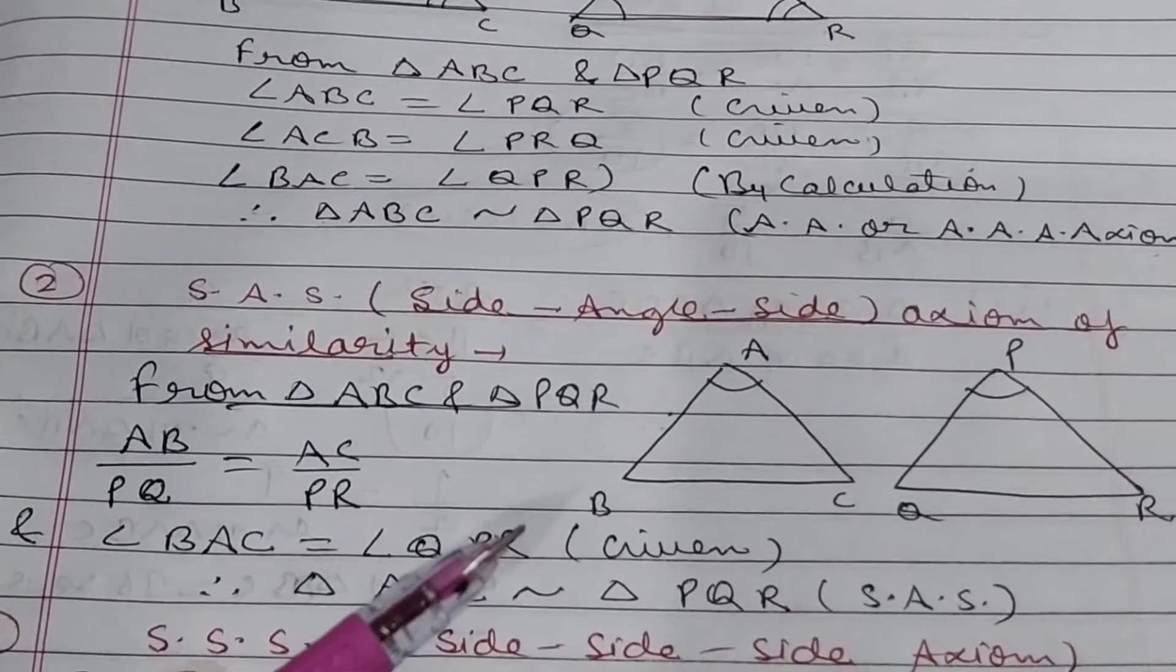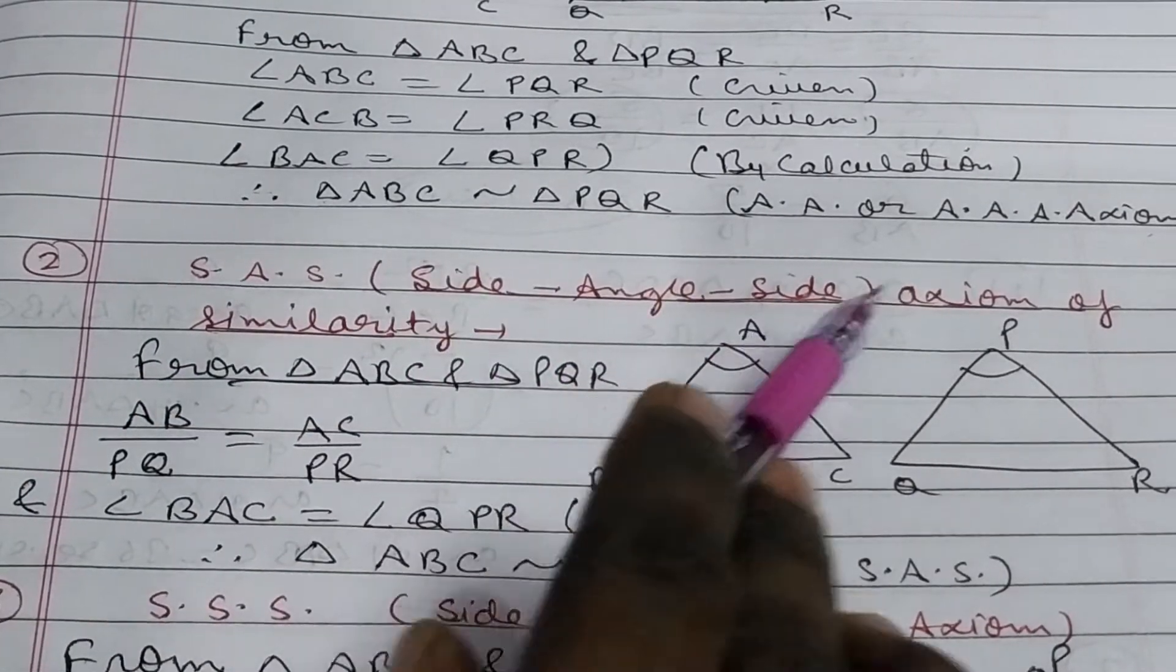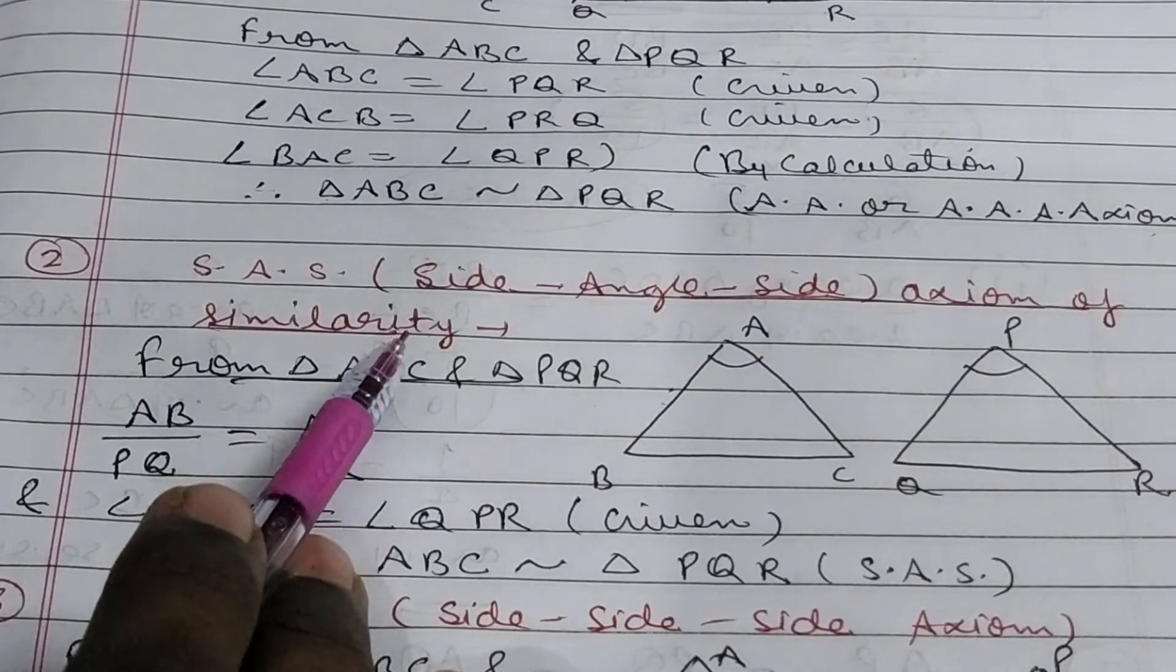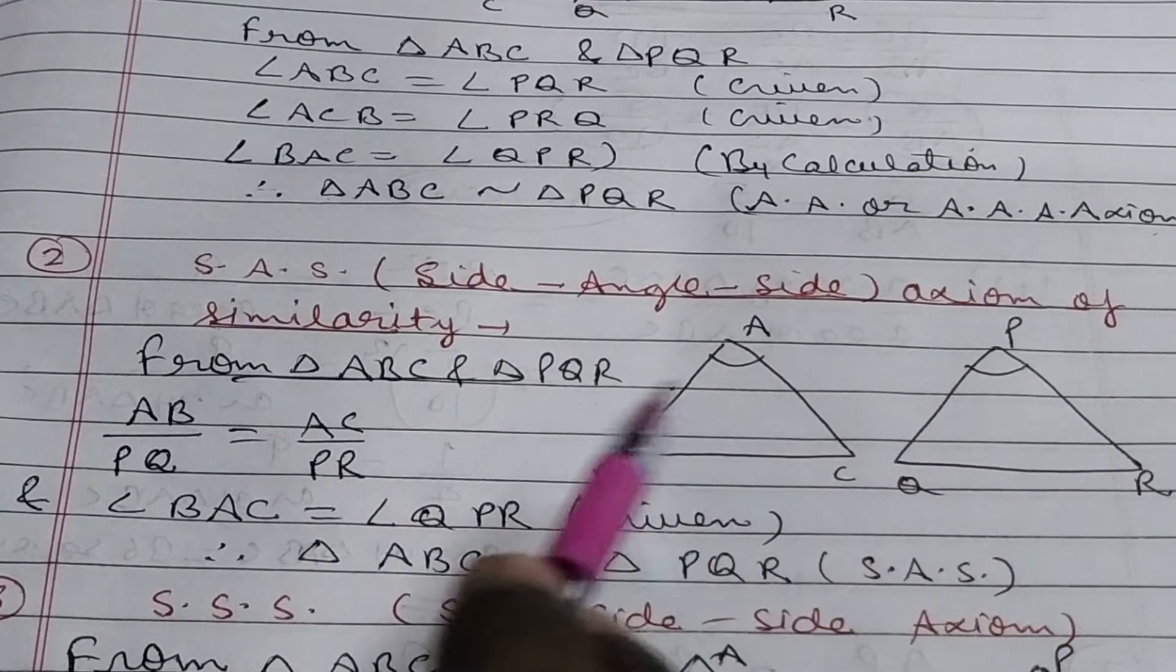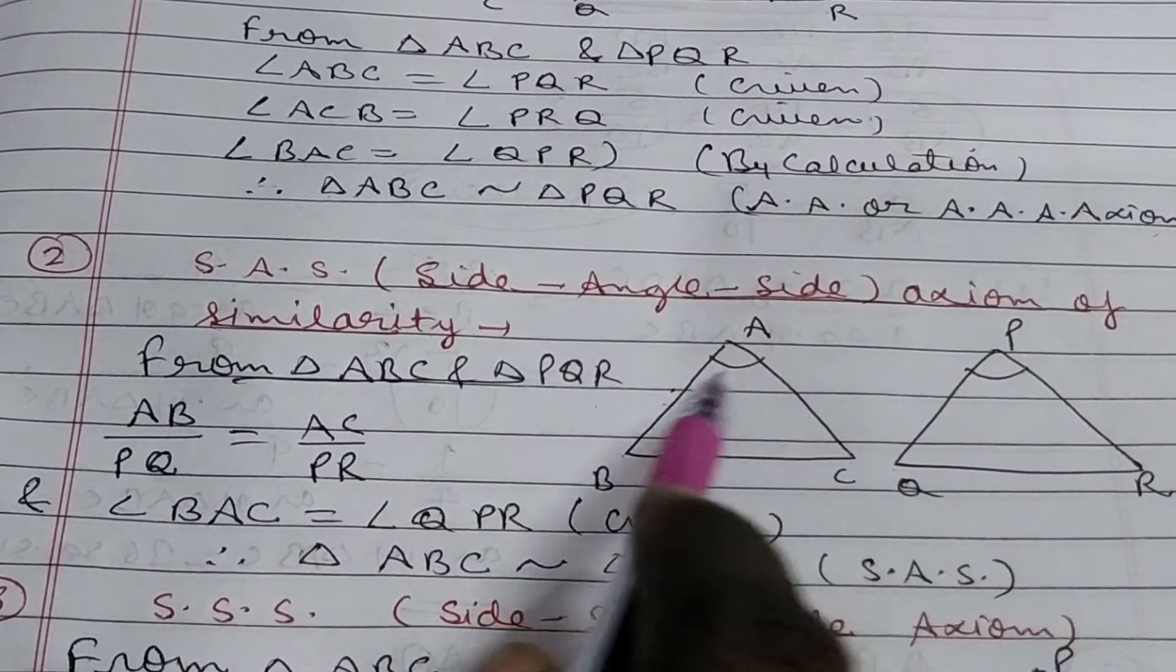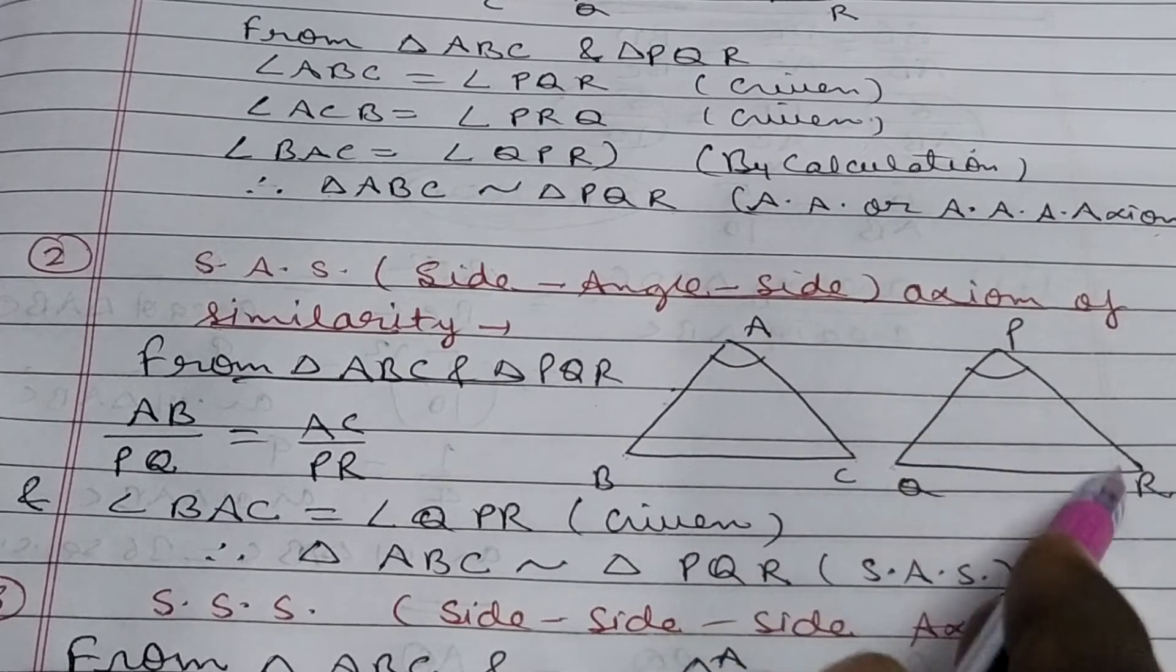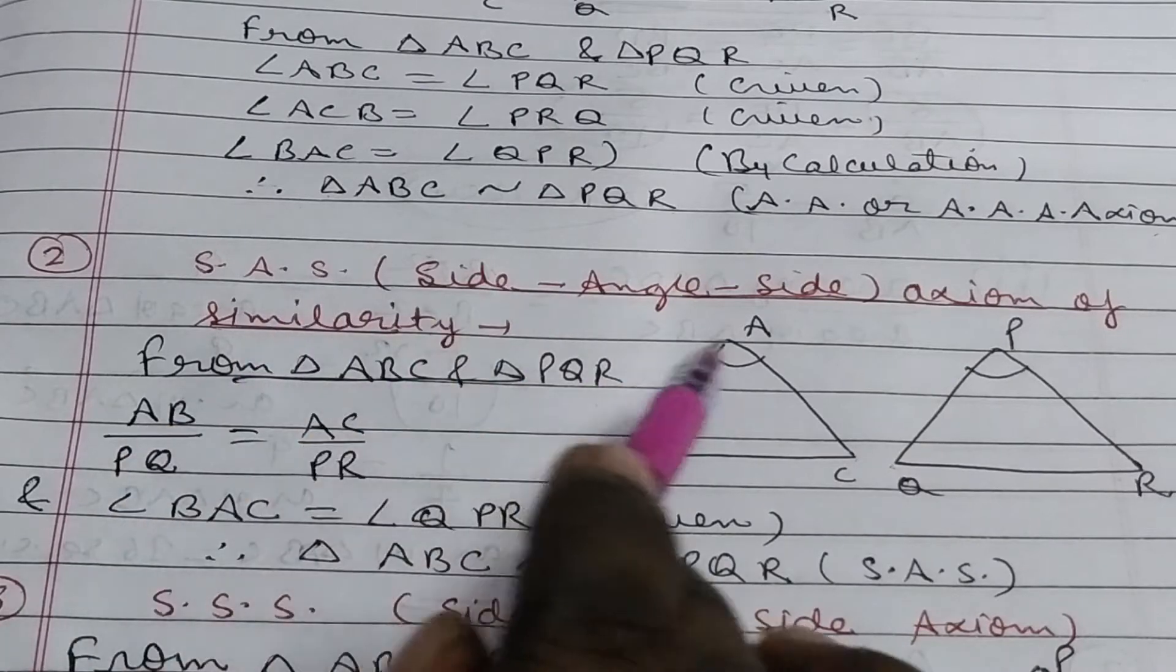The next property of similar triangle is SAS. SAS means side, angle, side axiom of similarity. Here, you should know that the side should not be equal. The side should be proportional in similar triangle. Suppose these are two triangles ABC and PQR. You can say, if the ratio of AB and PQ is same as ratio of AC and PR, and the angle between them, angle BAC and QPR are equal. In that case, the property will be SAS and triangle will be similar.